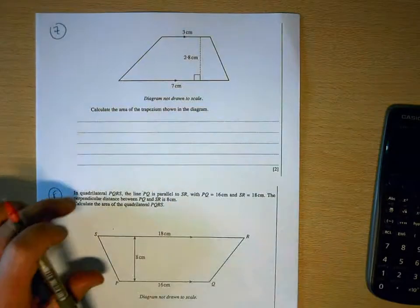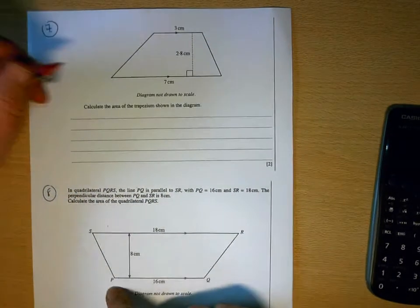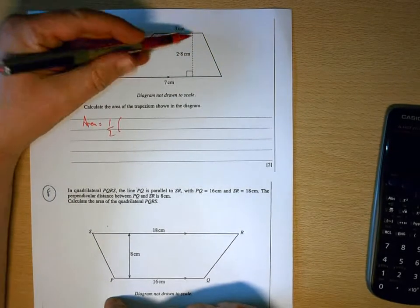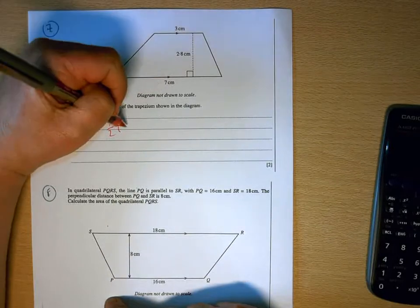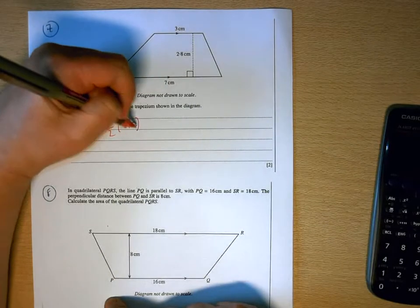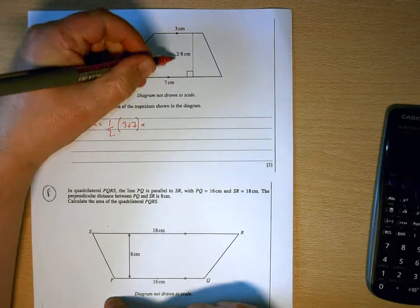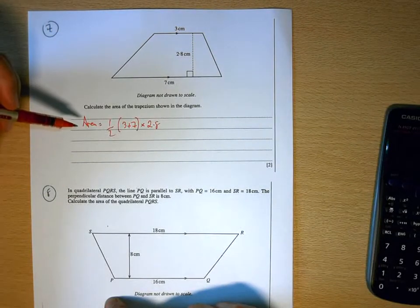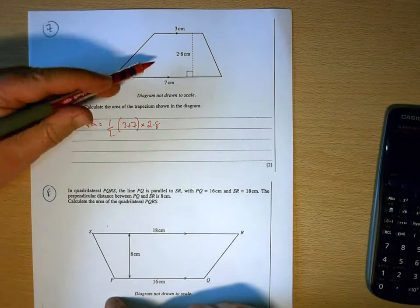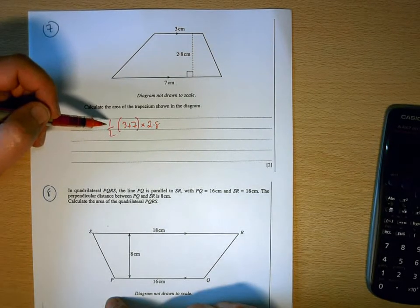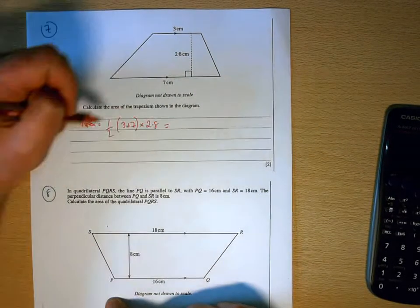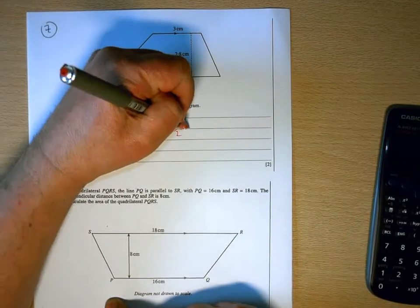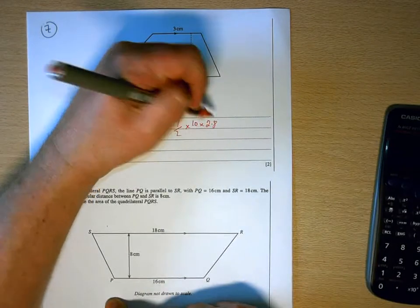Okay, two more trapezium questions. Area is a half, open bracket. So our parallel sides here are 3 and 7. And the distance between them is 2.8. I would think that this question is off a non-calculator paper because of the numbers that we're given here. What we've got is 3 plus 7 is 10.